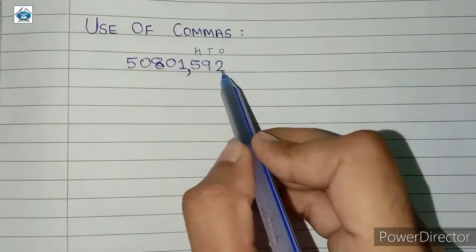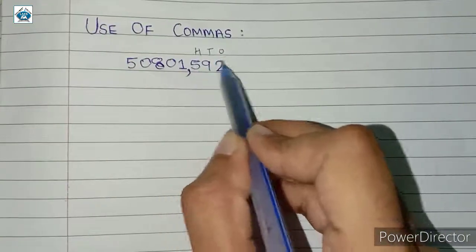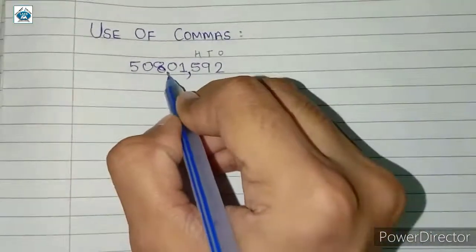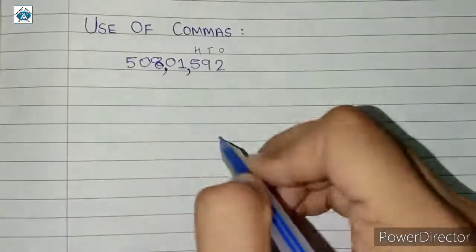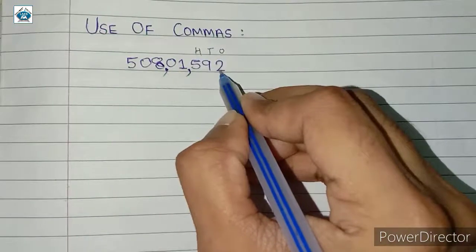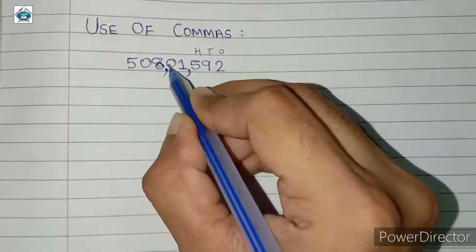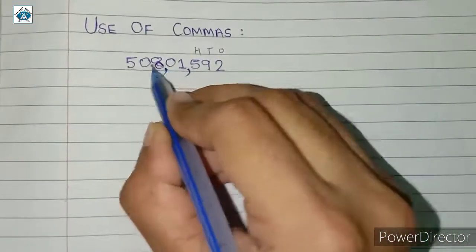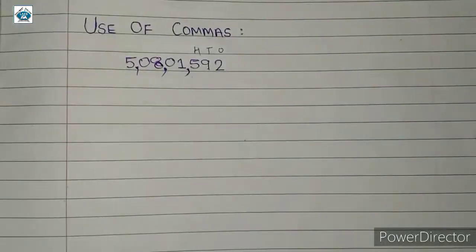The second comma will come after 2 more digits, that is 5 digits from the right. So from the right we count 1, 2, 3, 4, 5 digits and then the next comma will come again after 2 digits. And if there are more numbers to the left, there will be a gap of 2 digits between commas.